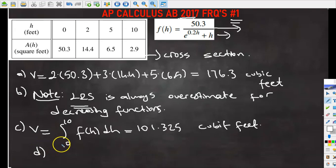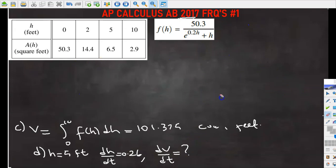In part D, it says water is pumped into the tank. So when the height of the water is 5 feet, and the height is increasing at the rate of 0.26, so basically dh over dt is 0.26. Using the model from part C, find the rate at which the volume of the water is changing with respect to time when the height of the water is 5 feet. So basically what we are being asked to figure out is dV over dt. Let me clean up the board.